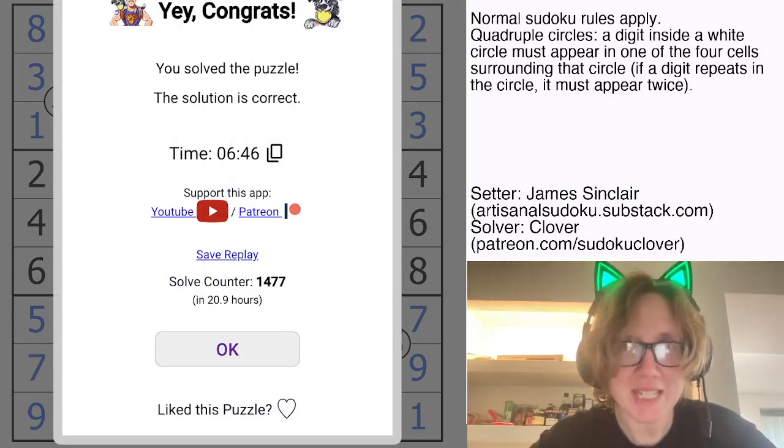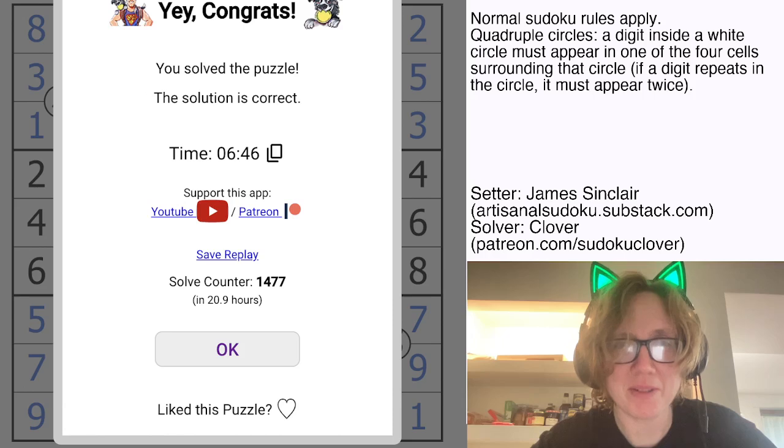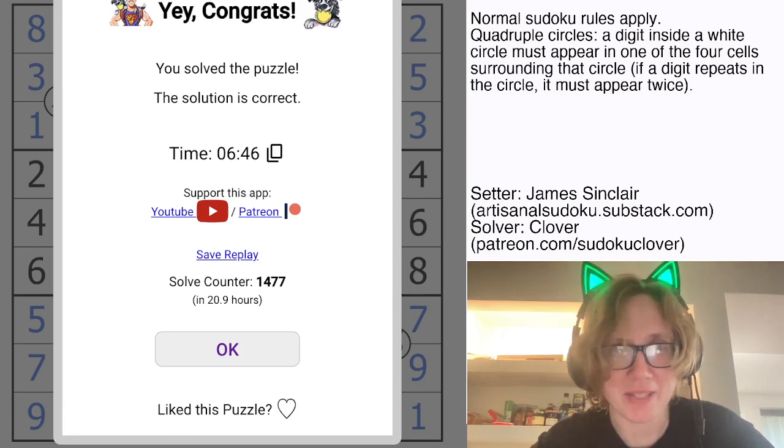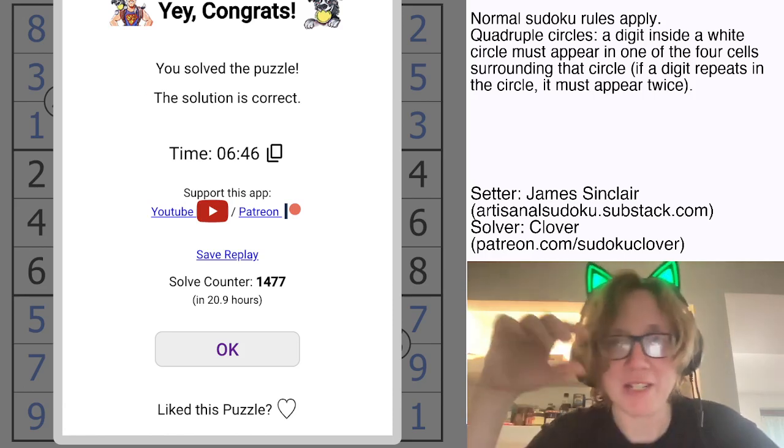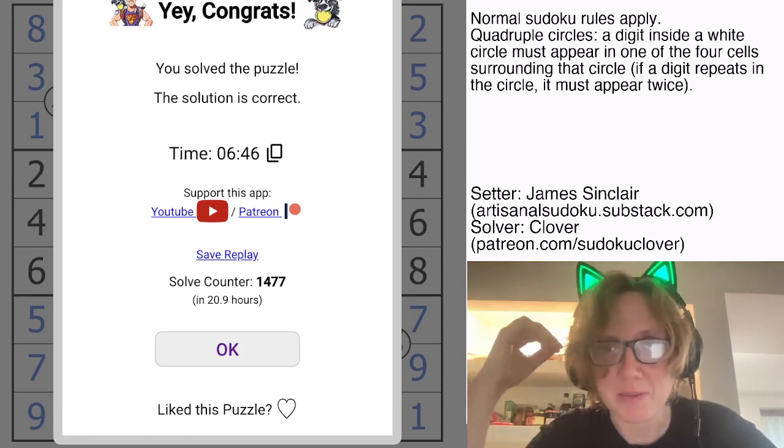There we go. And that is how you solve quadruple Sudoku. It's called Glanville by James Sinclair. Hope you enjoyed that. Hopefully we'll see more from James in the future, and if you want to check it out yourself, the link is in the description of this video below. See you next time.